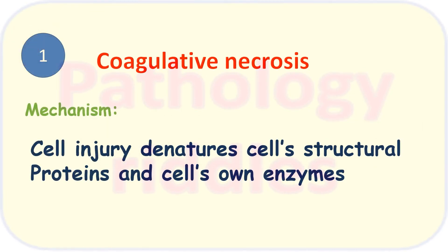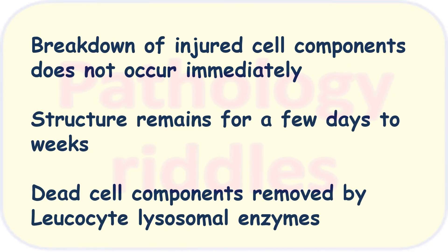What are the types of necrosis? The first type is coagulative necrosis, in which cell injury denatures the structure of the cell and proteins, and the cell's own enzymes start digesting it. There is breakdown of injured cell components, but it does not occur immediately — it remains for a few days to two weeks.